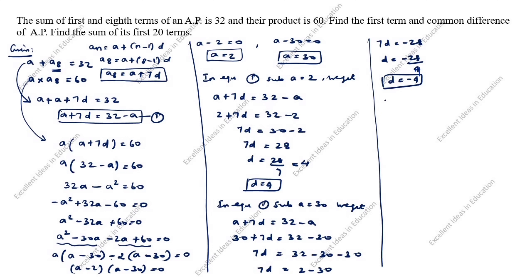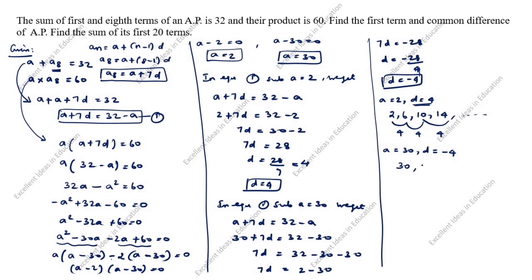For A = 2 and D = 4, the AP is 2, 6, 10, 14, and so on. You can verify: 6 minus 2 = 4, 10 minus 6 = 4, 14 minus 10 = 4 — the common difference is 4 and the first term is 2. For A = 30 and D = minus 4, the AP is 30, 26, 22, 18, and so on. Each term decreases by 4, confirming the common difference is minus 4.